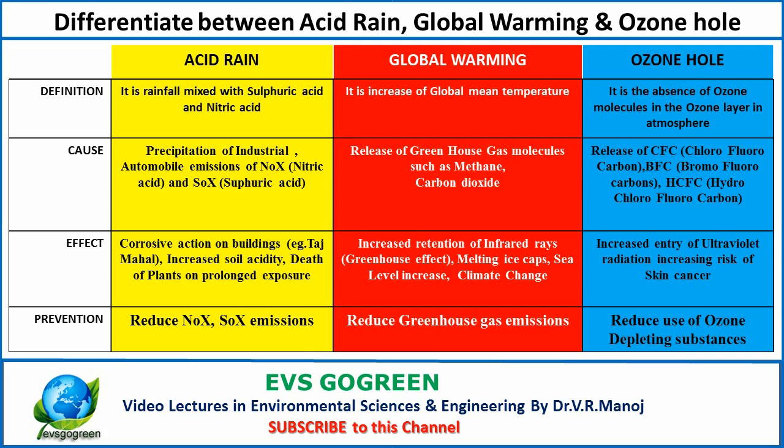One way to reduce acid rain is to reduce NOx and SOx emissions. Another way to reduce global warming is to reduce greenhouse gas emissions. For ozone hole, prevention depends on the reduction of commercial products which use ozone depleting substances.